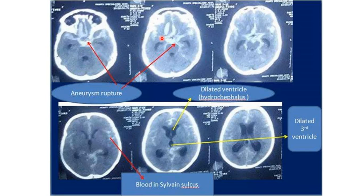A small coil wire is placed within the aneurysm, causing it to clot and stopping the bleeding. Alternatively, surgical clipping of the ruptured aneurysm can be performed. You can also see the dilated temporal horns of the lateral ventricle — not seen normally — indicating early onset hydrocephalus.